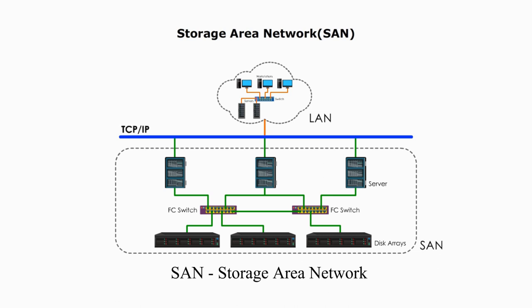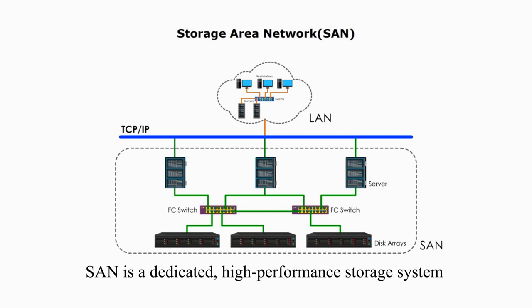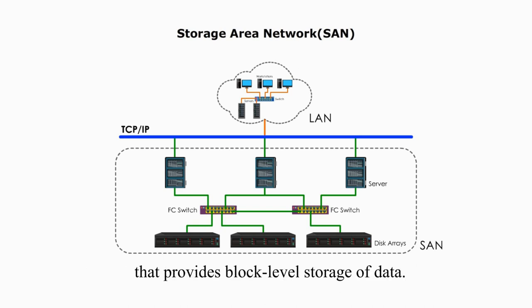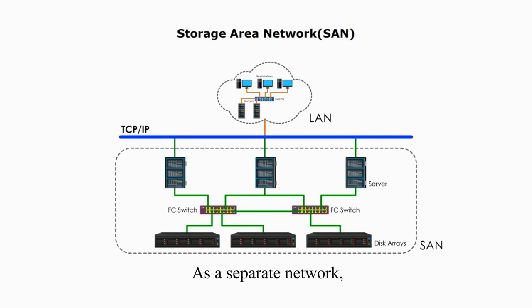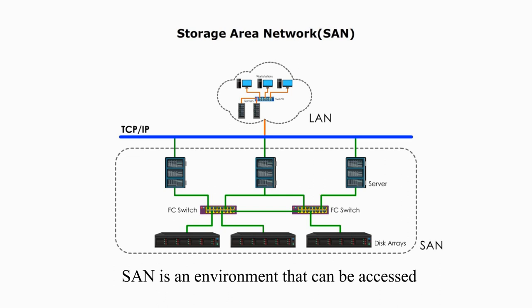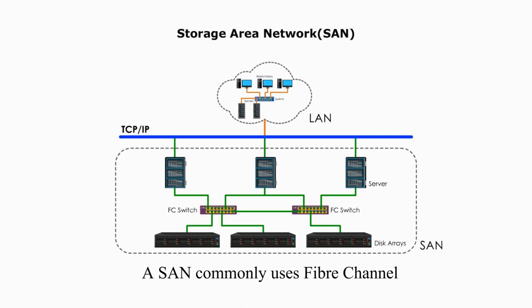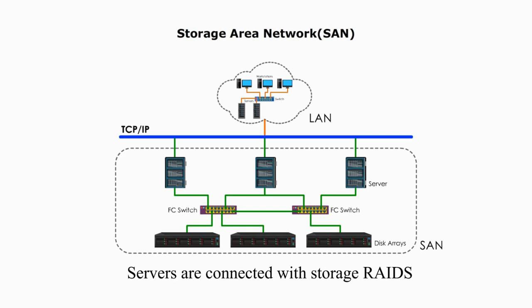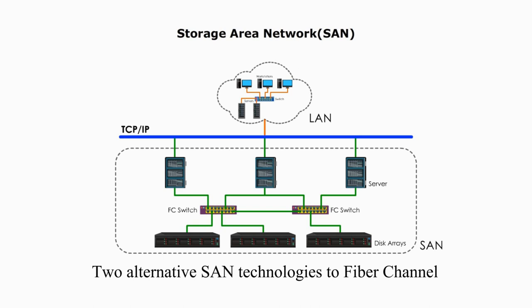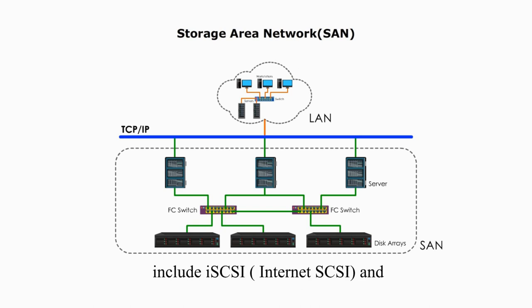SAN — Storage Area Network. SAN is a dedicated high-performance storage system that provides block-level storage of data. The technology is based on Fiber Channel, a fast data transfer protocol. As a separate network, SAN is an environment that can be accessed by TCP/IP networks but is not affected by TCP network traffic. SAN commonly uses Fiber Channel data transfer protocol to transfer data. Servers are connected with storage arrays through the Fiber Channel switch. Two alternative SAN technologies to Fiber Channel include iSCSI (Internet SCSI) and Fiber Channel over Ethernet.